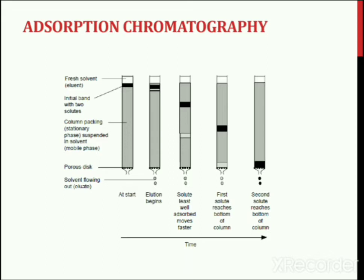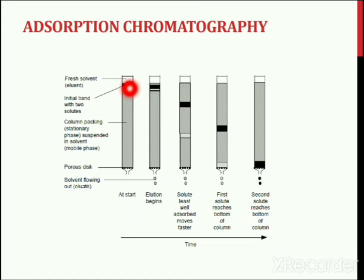Column chromatography works in the following steps. Step 1: the mobile phase or eluent is selected; it may be either a solvent or a solvent mixture. Then the stationary phase is made wet with the solvent. At this stage the compound mixture that needs to be separated is added from the top of the column.